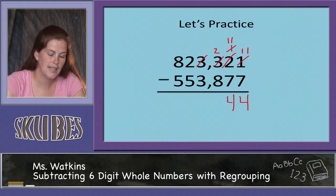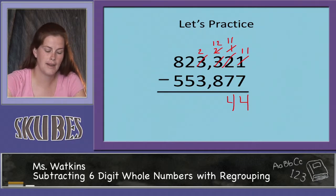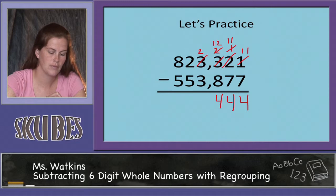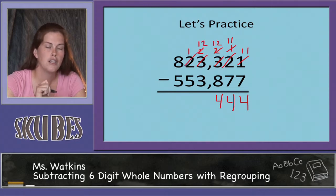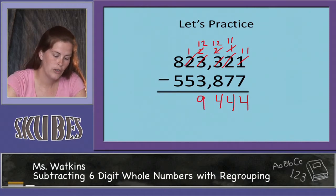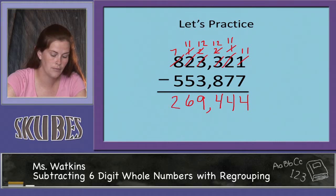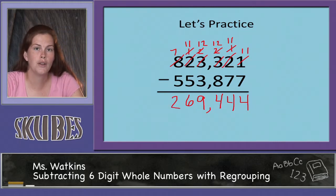We need to regroup again: this 3 becomes a 2 and this 2 becomes a 12. 12 minus 8 equals 4. We need to regroup again: this 2 becomes a 1 and this 2 becomes a 12. 12 minus 3 equals 9. Regroup one last time: this 8 becomes a 7 and this 1 becomes an 11. 11 minus 5 equals 6, and 7 minus 5 equals 2. So our answer is 269,444.